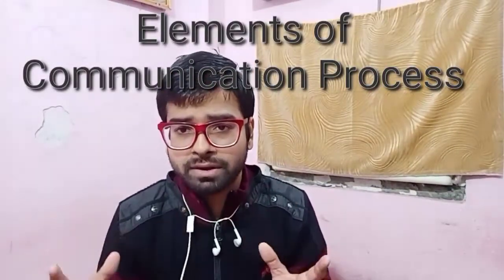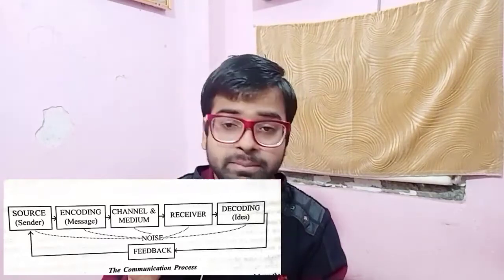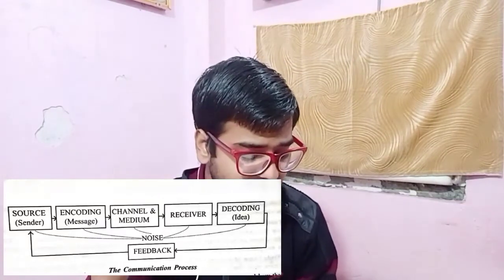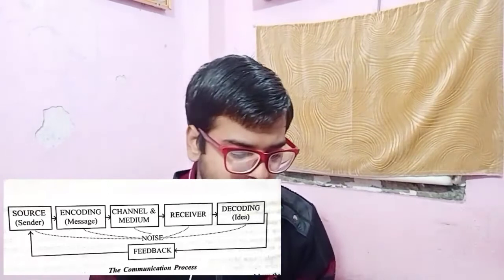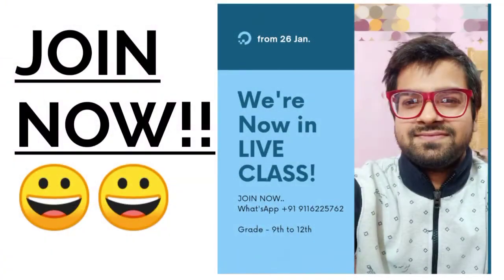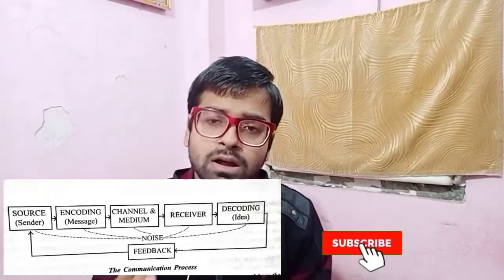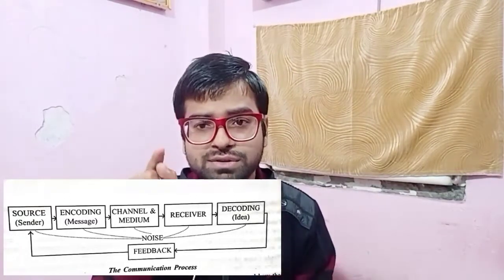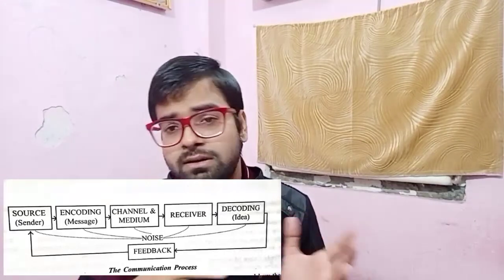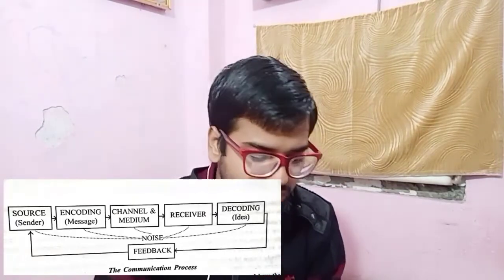Hello everyone and welcome back. Today we are talking about Class 9 Chapter on Communication. Today's topic is the elements of the communication process — this is one of the most important topics. As you can see in this figure, it covers several key elements: sender, encoding, channel or medium, receiver, decoding, and feedback. These six major points are very important for this chapter, and you need to draw this diagram. It is compulsory from an exam point of view.